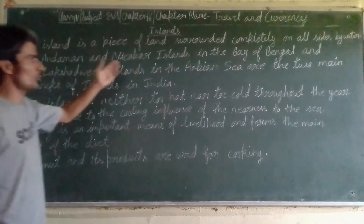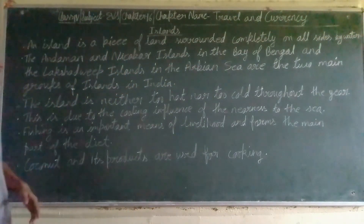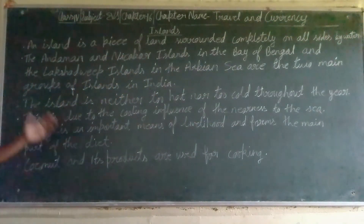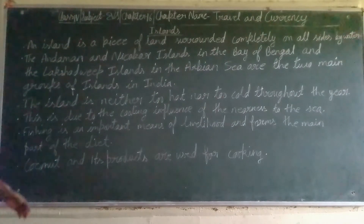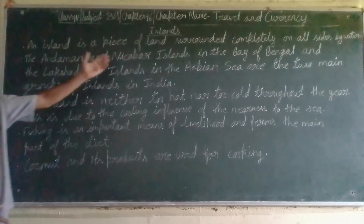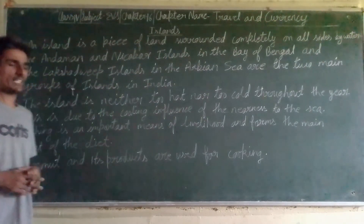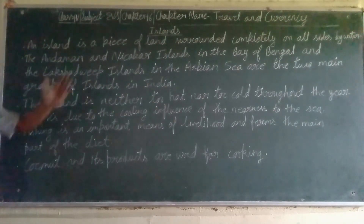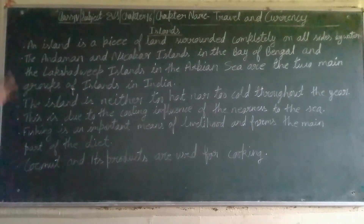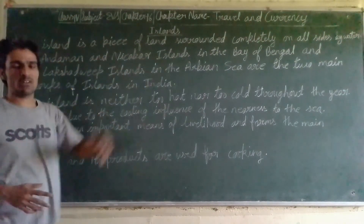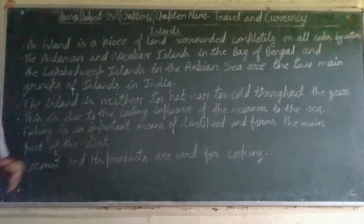In India, there are two main groups of islands: the Andaman and Nicobar Islands, located in the Bay of Bengal, and the Lakshadweep Islands, located in the Arabian Sea.